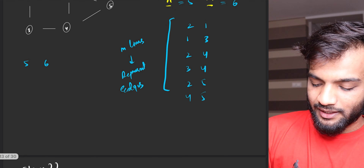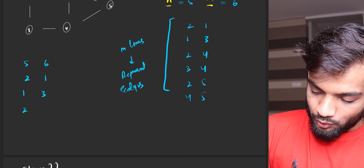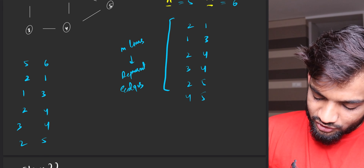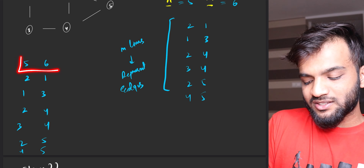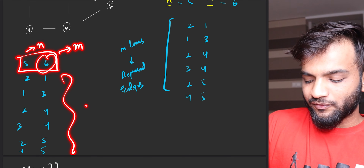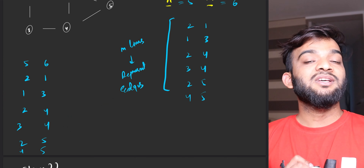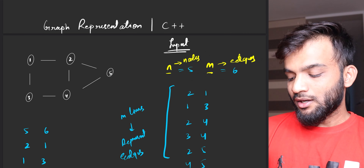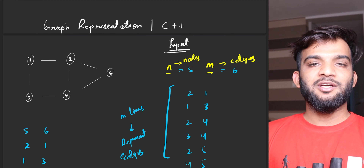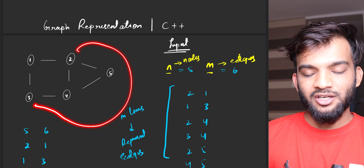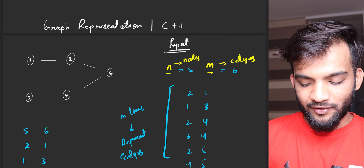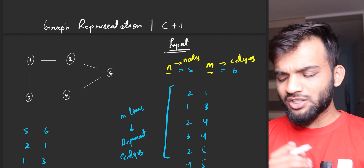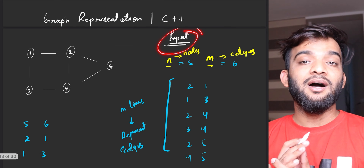So the input will look like: '2 1, 1 3, 2 4, 3 4, 2 5, 4 5.' The first line is n and m, and the next m lines are the edges. There is no specific boundary on the number of edges — n is constant but m can be anything.